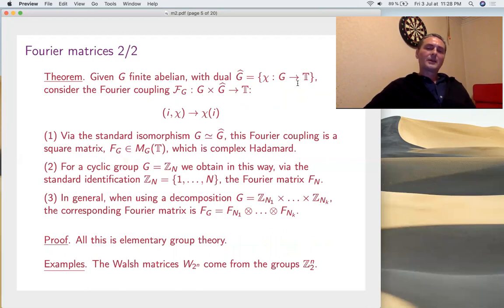Then, if you look at the characters, group morphisms into T, this is the so-called group dual denoted g hat. And now, if you have the Fourier coupling between g and g hat, it's just applying the character to the number. i chi goes to chi of i. The point now is that g and g hat are isomorphic.